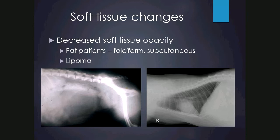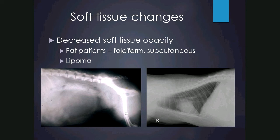Decreased apparent soft tissue can also be due to fat, which is more radiolucent than soft tissue. In obese patients any falciform or subcutaneous fat is more radiolucent than structures such as the liver and heart. Lipoma has the same effect — a large more radiolucent fat-opacity structure within the abdomen can be seen to differ from the small intestines, bladder, and pelvic limb muscles, consistent with an intra-abdominal lipoma.